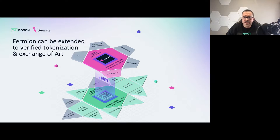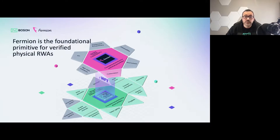In exactly the same way, Fermion can be extended for any verifiable physical real-world asset, including art. So Fermion is this foundational primitive for verified physical real-world assets.